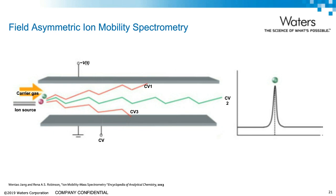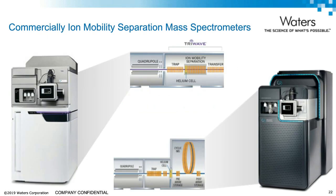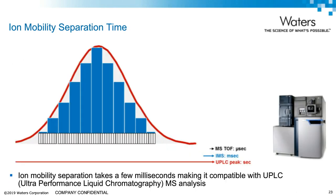For much of its history, ion mobility separation mass spec was a very niche academic technique that required you to build your own instrumentation. Over the last few years, the use of ion mobility mass spec has exploded due to availability of robust commercial systems. The systems shown here have ion mobility incorporated into high-resolution QTOF mass spec, so that ions can be isolated using a quadrupole, then separated using ion mobility, and then analyzed by a time-of-flight mass analyzer. Ion mobility separation takes only a few milliseconds, making it compatible with existing UPLC-MS analysis or imaging workflows.